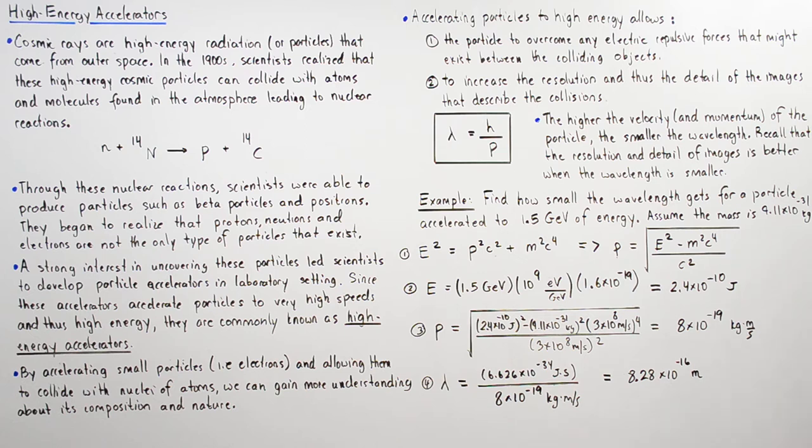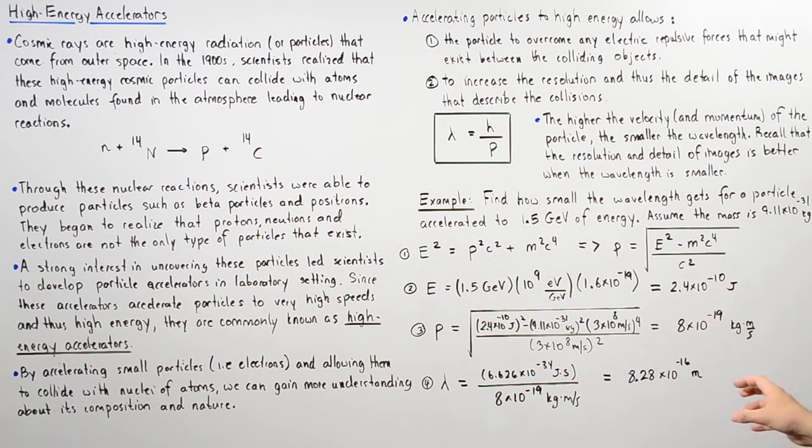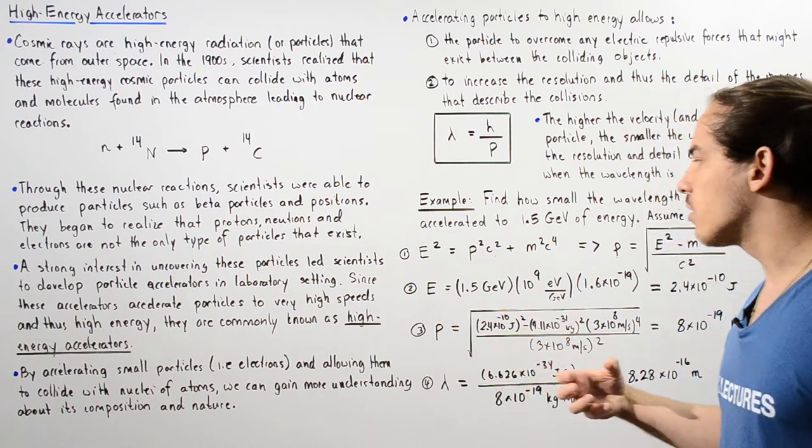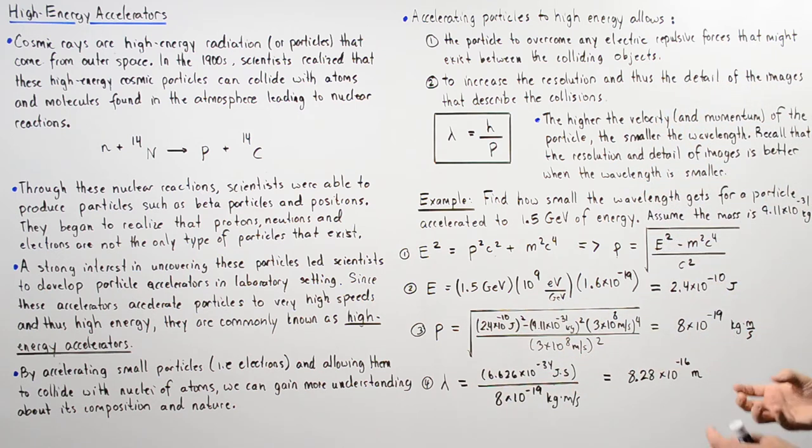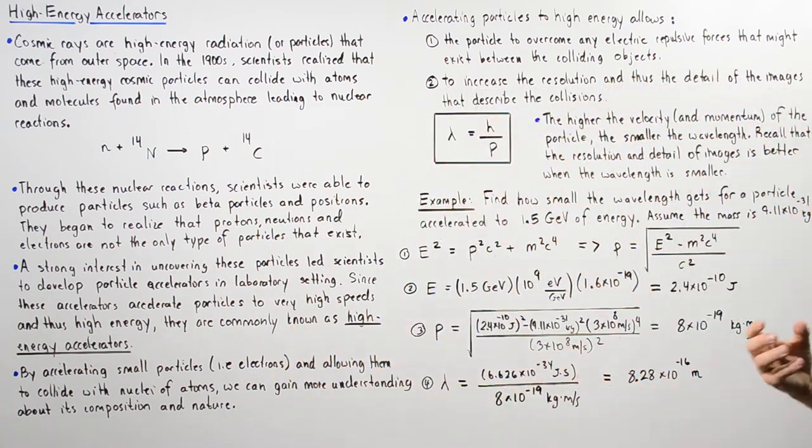Now we plug in this energy into this equation. We use the mass of our electron and the speed of light is 3 times 10 to the 8 meters per second. We get about 8 times 10 to the negative 19 kilograms multiplied by meters divided by seconds. This is the momentum of our particle that is obtained as a result of our high-energy accelerator.